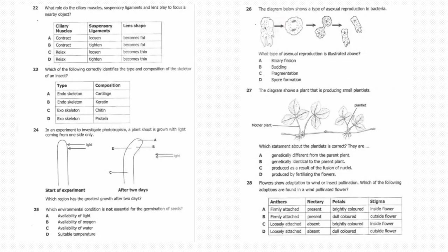Twenty-two: What role do the ciliary muscles, suspensory ligaments, and lens play to focus a nearby object? Answer is A: ciliary muscles contract, suspensory ligaments loosen, and then the lens shape becomes fat. Twenty-three: Which of the following correctly identifies the type and composition of the skeleton of an insect? The answer is C: type exoskeleton, and then composition chitin.